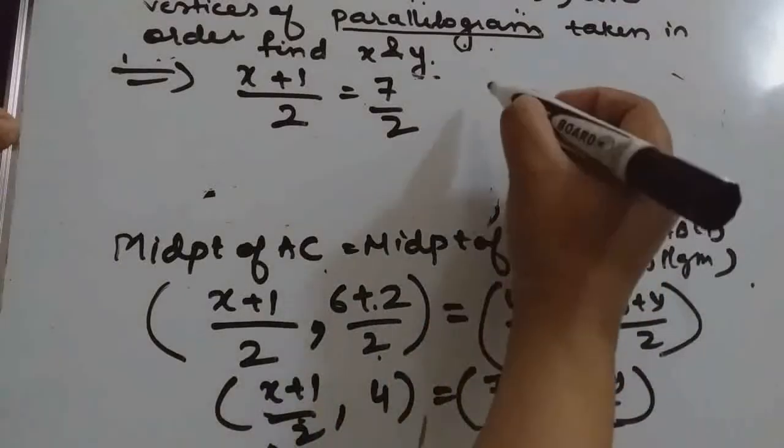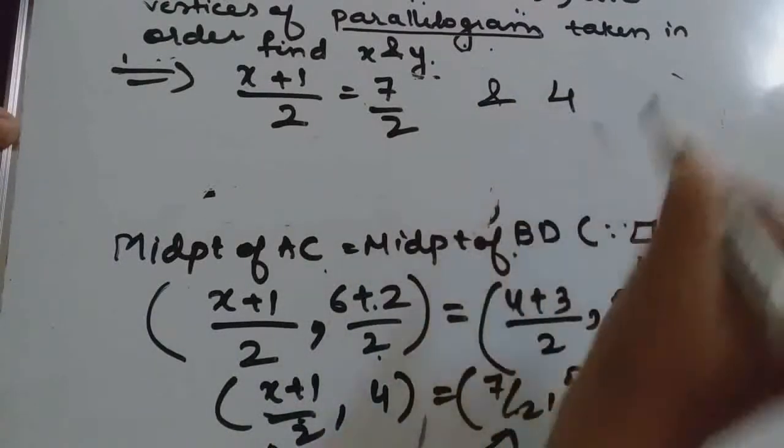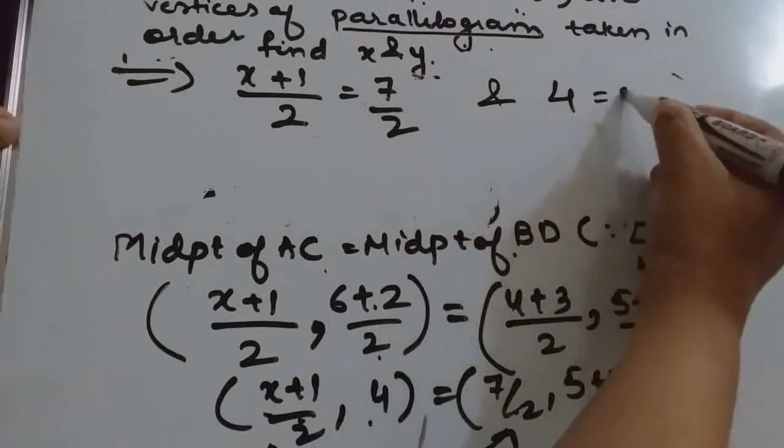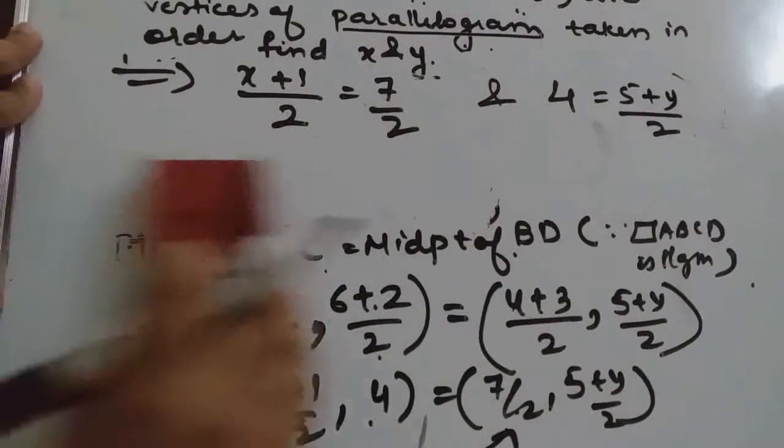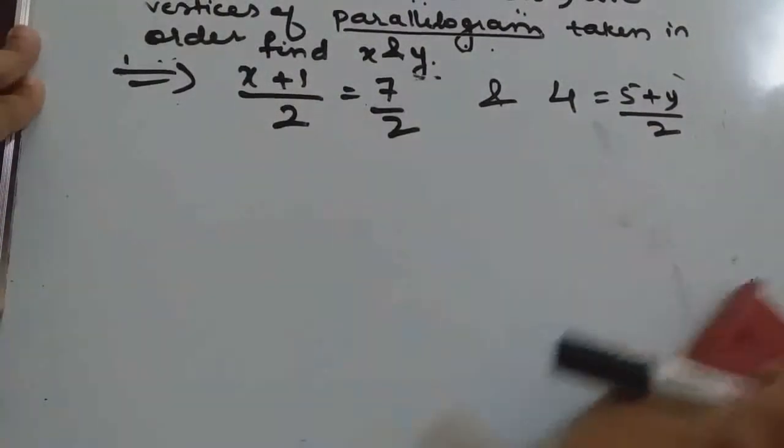Both the x coordinates are equal, and both the y coordinates, so 4 equals (5 + y)/2. So now we will solve to get the value of x and y.